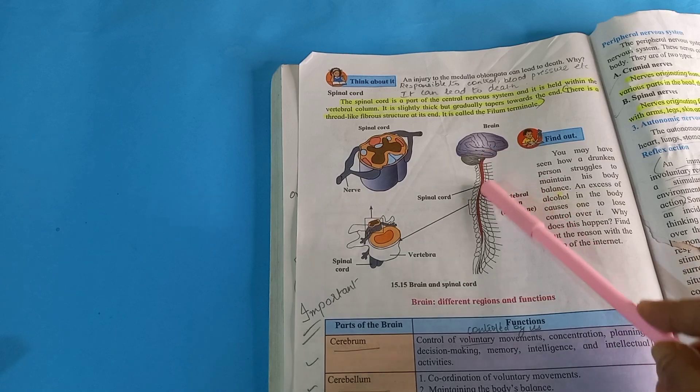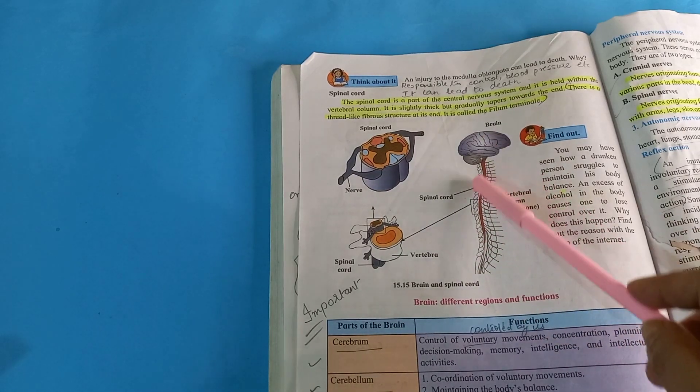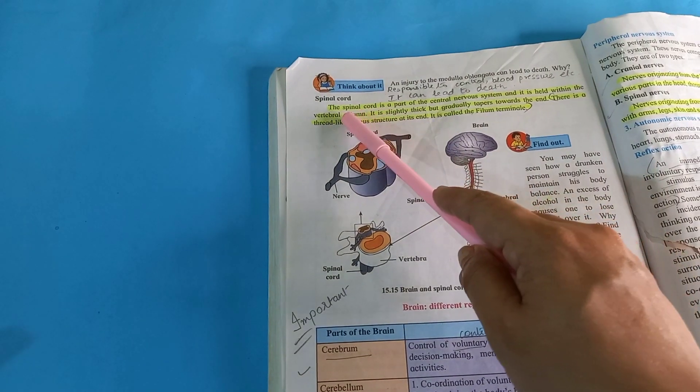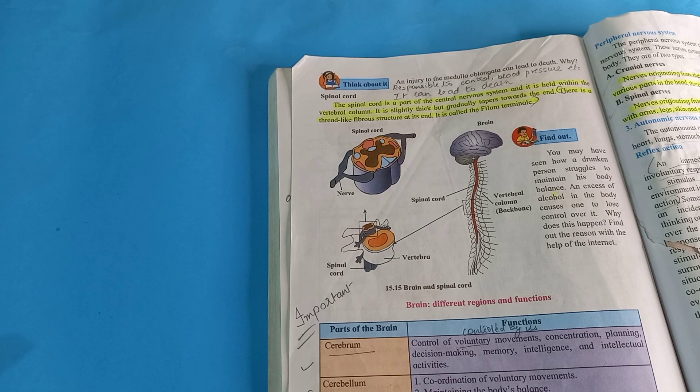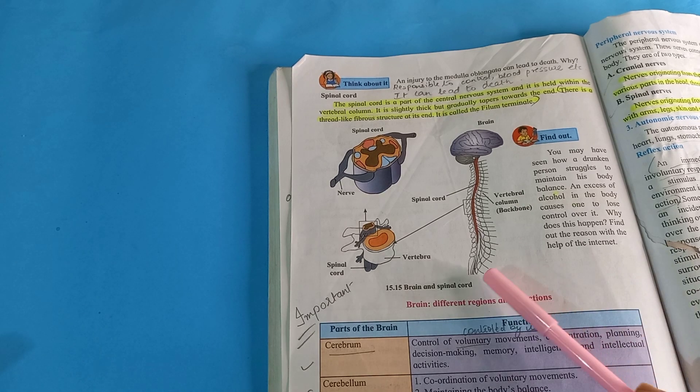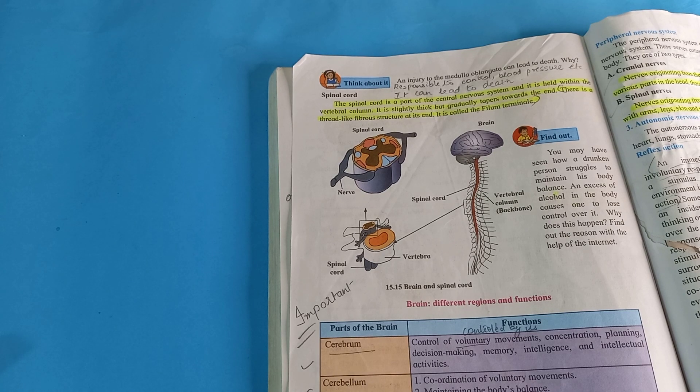Ye sab ismein se kuch bhi aapka damage ho gaya to aap paralytic attack mein bhi aa sakte hain. So this is spinal cord, aur spinal cord ke bare mein kya bataya gaya upar hai. Ye maine yellow line se kya hua hai: the spinal cord is a part of the central nervous system and it is held within the vertebral column. It is slightly thick but gradually tapers towards the end. There is a thread-like fibrous structure at its end, yaha pe, thread-like. It is called the filum terminale. To ye aapka main hai. So I hope you understood.